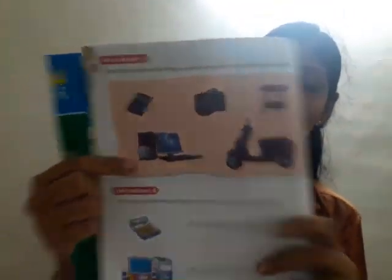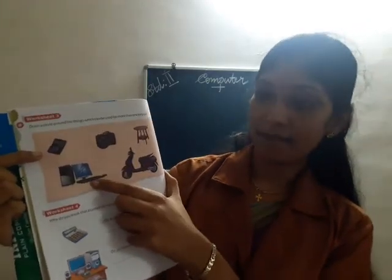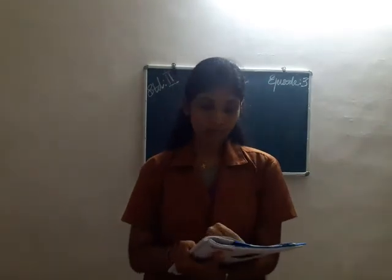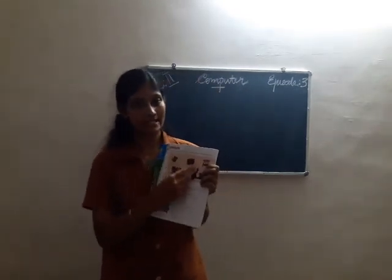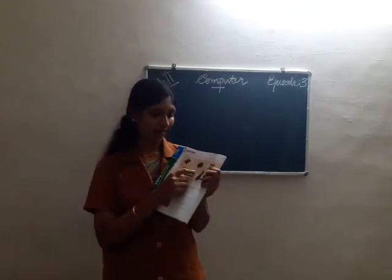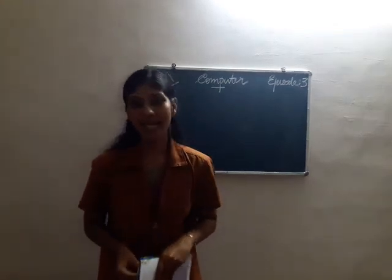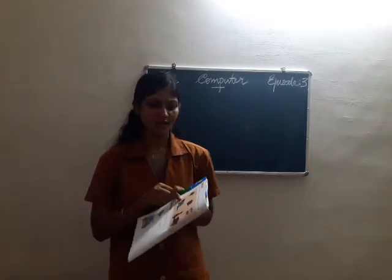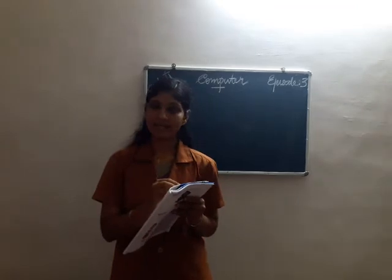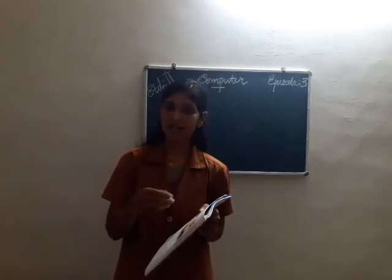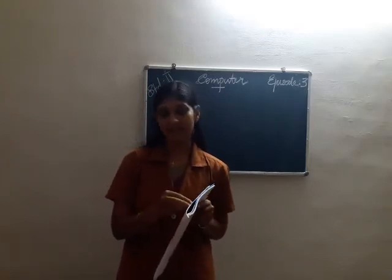Here are some pictures: a calculator, a camera, a table, a computer, and a scooter. You have to circle the things which are used for more than one purpose. First is the calculator — we know a calculator is only used for calculations. Can it be used for any other purpose? No, it is only used for calculating. So we do not circle the calculator.